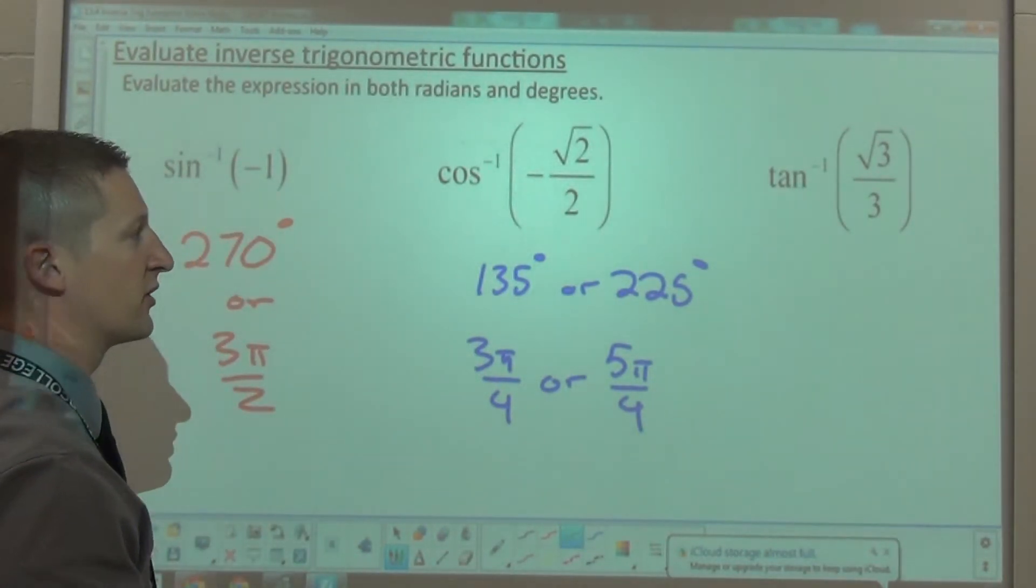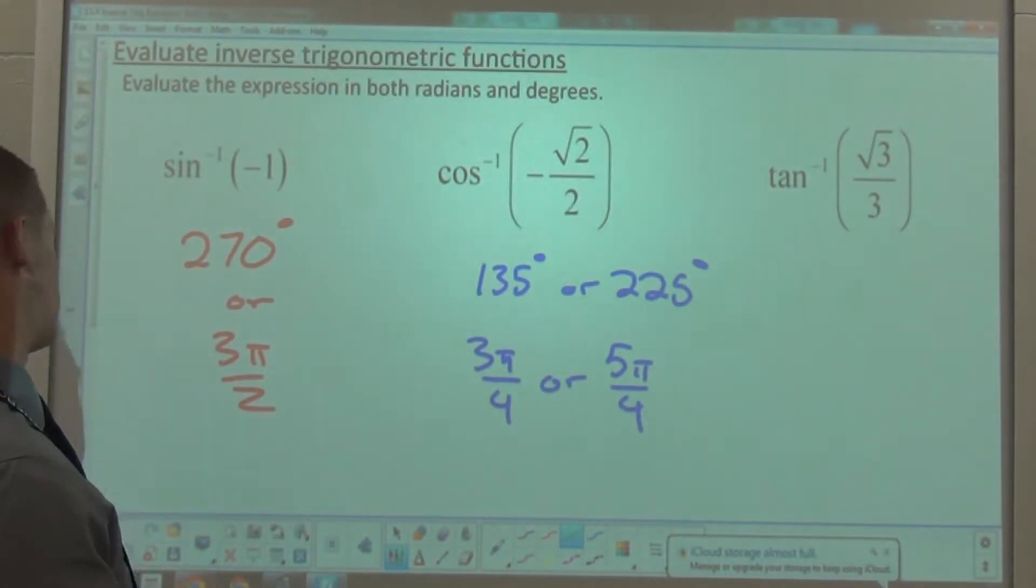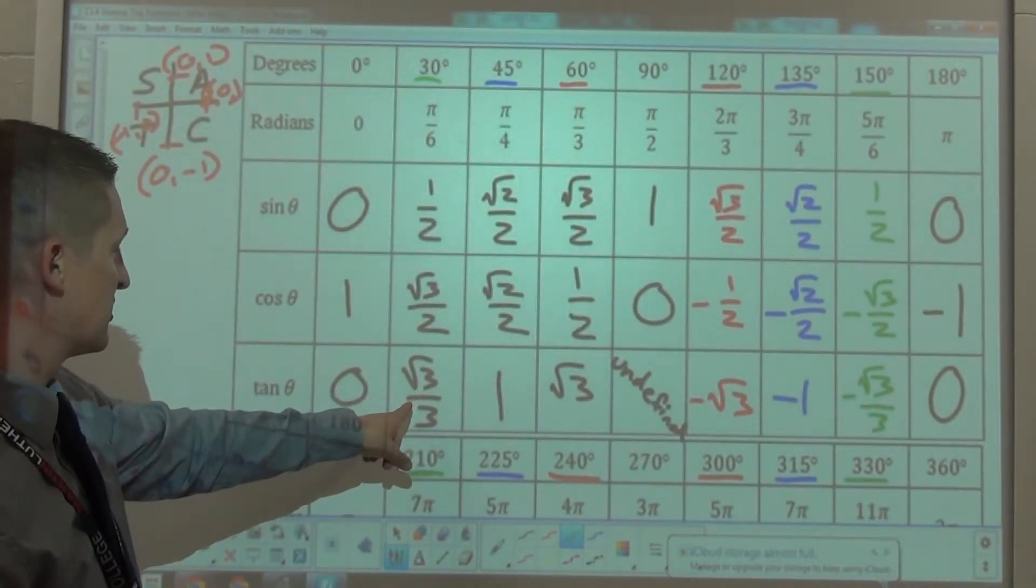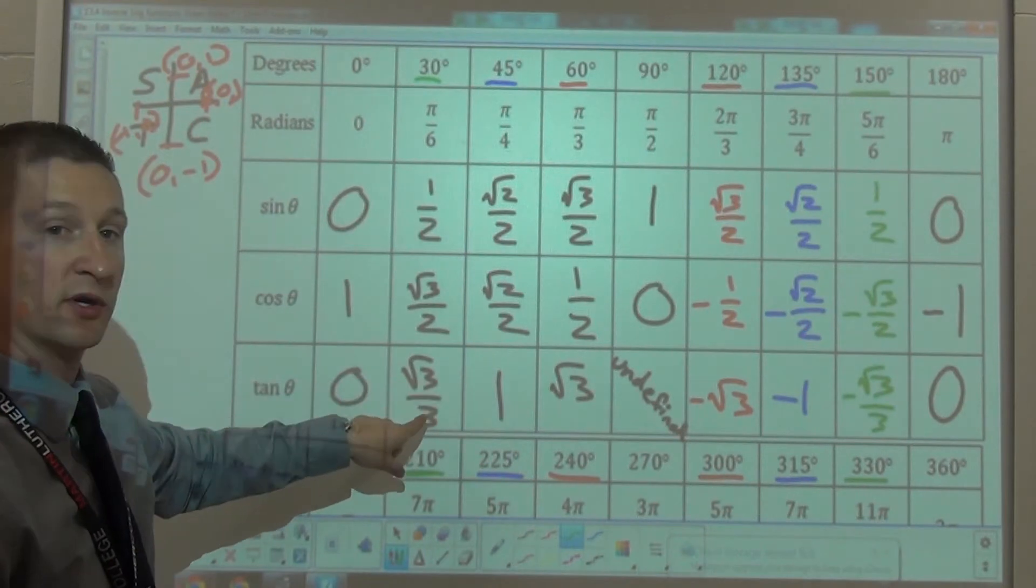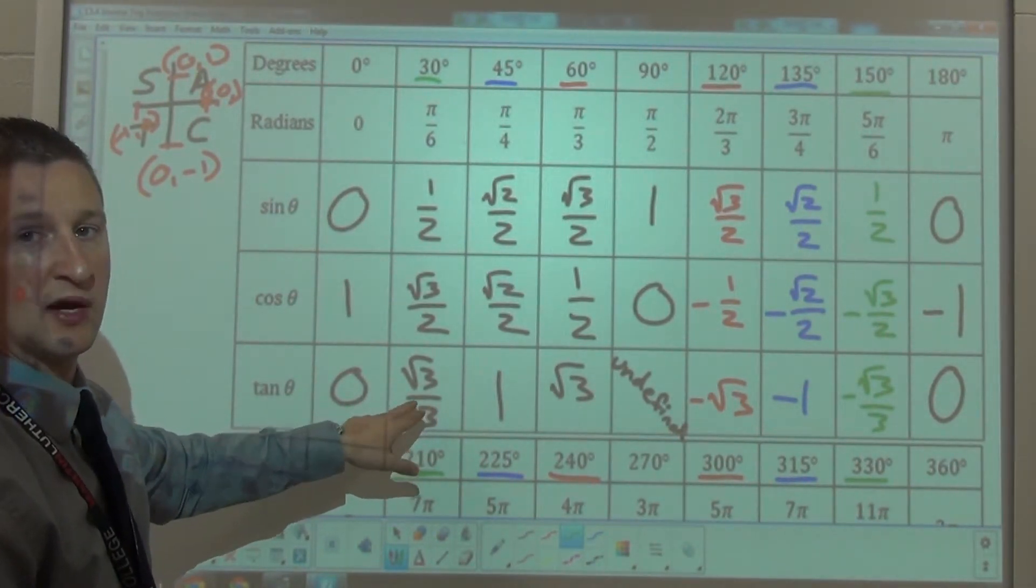Last one, arc tangent of the square root of 3 over 3. I seem to remember that matching up with maybe 30 degrees or 60 degrees. Look, tangent of 30 degrees is the square root of 3 over 3. So, there's one of them, but remember there's another one, because tangent is going to be positive in another quadrant.